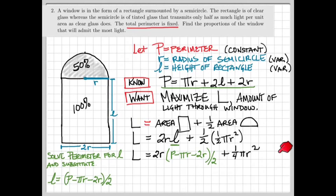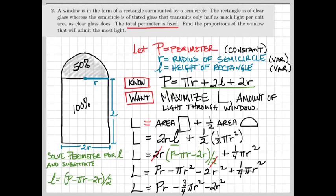Specifically, there's a common factor of 2 that can be divided out. You can distribute the R to give you PR - πR² - 2R² + 1/4 πR². Adding together the like terms involving πR² finally gives us that the light function is PR - 3/4 πR² - 2R².